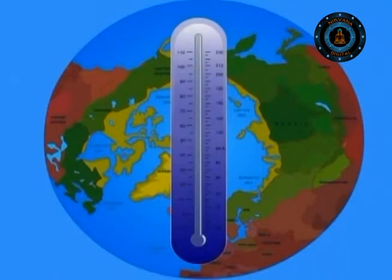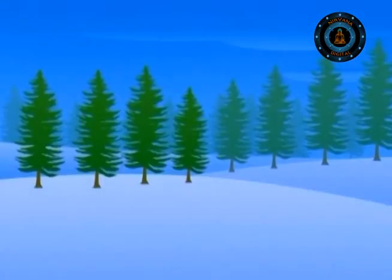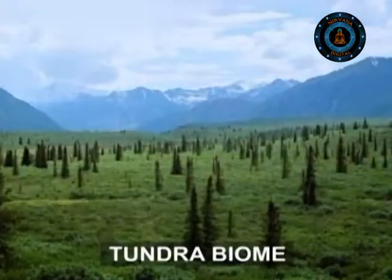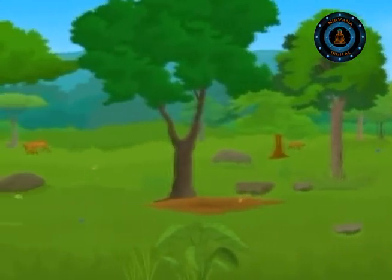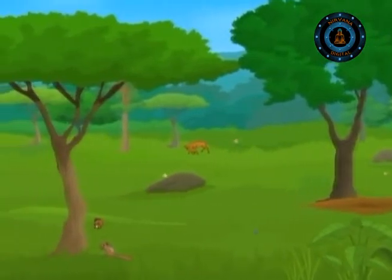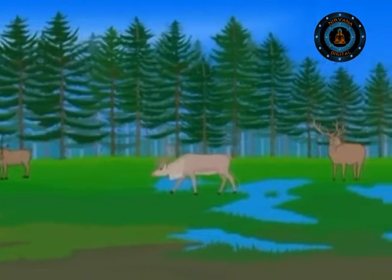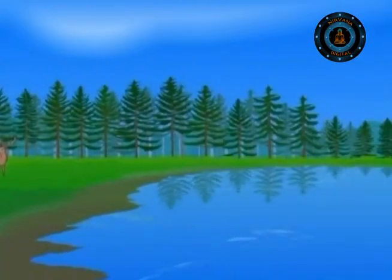Beyond the northern limits of Taiga, the temperature is too low for any full-size trees to grow, so the biome with plants and shrubs replaces Taiga. This biome is known as the Tundra. The southern limits of Taiga open up to forests of broad-leaved trees, and in between you come across the scenic beauty of forests, wetlands and lakes.